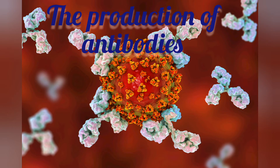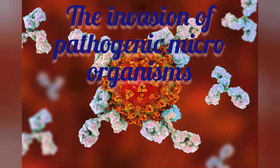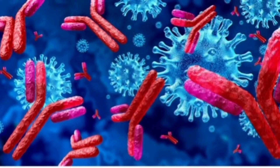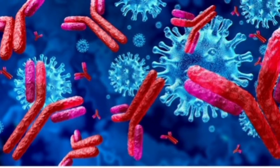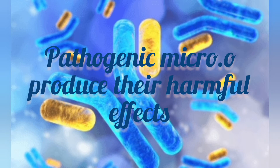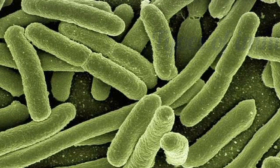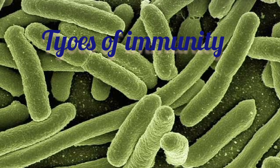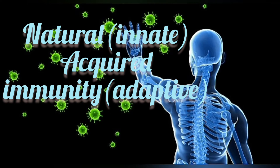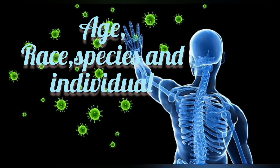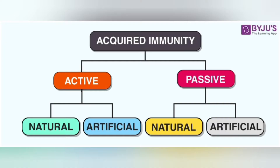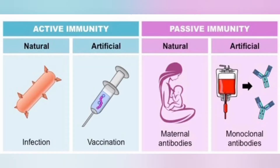The production of antibodies in the body is stimulated by the invasion of pathogenic microorganisms such as bacteria or virus. The nature of the antibodies depends upon the manner in which pathogenic microorganisms produce their harmful effects. Now, what are the types of immunity? Immunity is divided into natural immunity and acquired immunity. Natural immunity is based on age, race, species, and individual. Acquired immunity is again divided into active immunity and passive immunity.